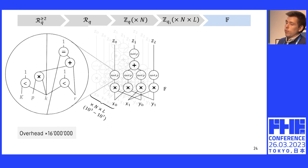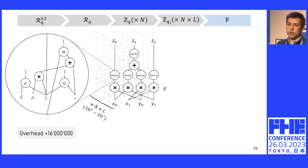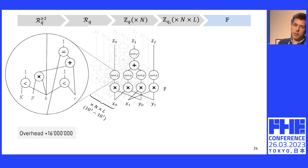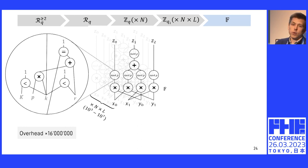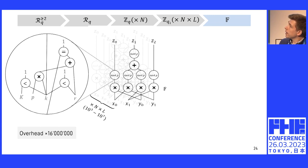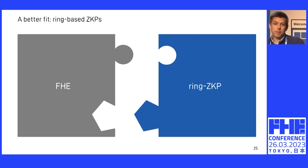So this gives you an idea of the overhead required just to prove a very simple multiplication of an FHE ciphertext using your ZKP of choice. Wouldn't it be nice if we had a ZKP that works much more natively with the FHE scheme? This also has additional benefits: we have very nice hardware accelerators for FHE, ranging from GPUs all the way to heavyweight accelerators from the DARPA DPRIVE project. If we have a ZKP that works on the same rings and on the same underlying math libraries as FHE, we can natively accelerate both at the same time.